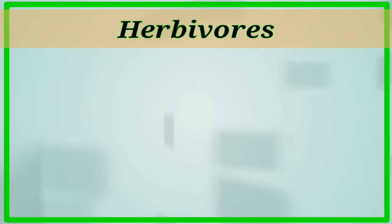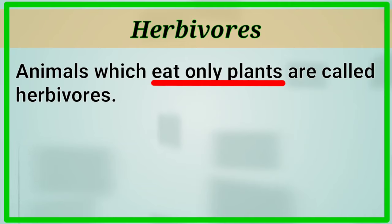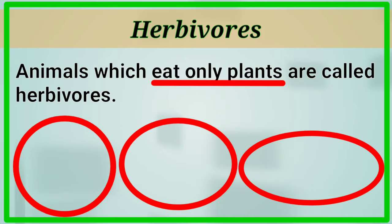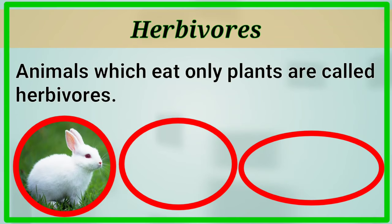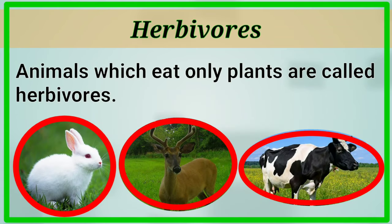The first category is herbivorous. What is herbivorous? Have you heard the name? Yes — animals which eat only plants are called herbivorous. That is, these animals eat only plants and plant products. Examples: rabbit, deer, cow. You can give more examples for herbivorous animals.